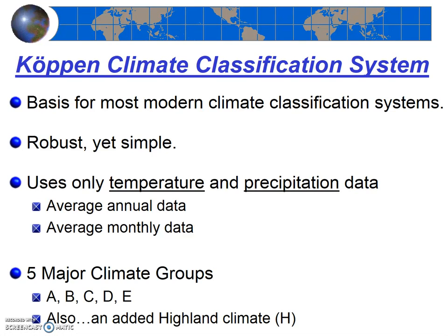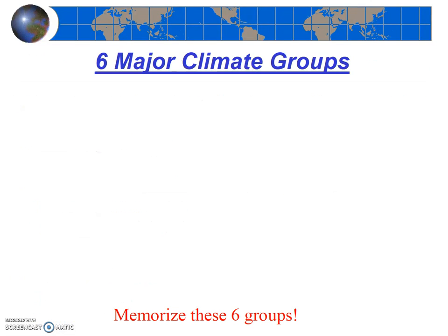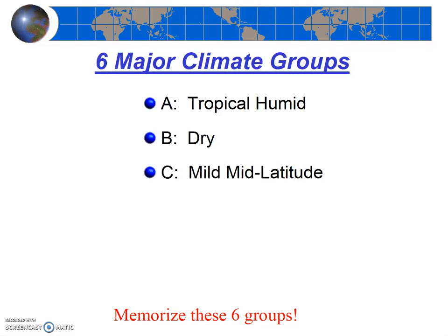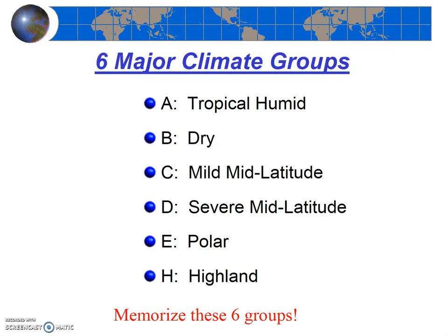The modified Köppen system we're going to be using includes five major climate groups — A, B, C, D, and E — and also an additional climate group called the Highland climate. You should memorize these six climate groups. It's not that hard, especially as the letters more or less represent latitude. These first five are generally, but not always, related to latitude, and the sixth just accounts for elevation.